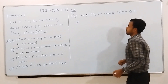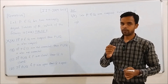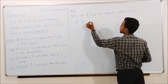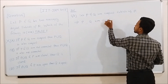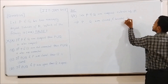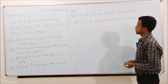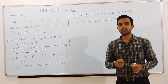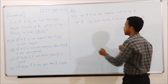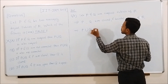By the Heine-Borel theorem, we know that a subset of R is compact if and only if it is closed and bounded. So since P and Q are compact subsets of R, this implies P and Q are closed and bounded subsets of R.